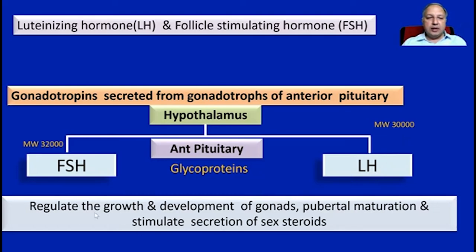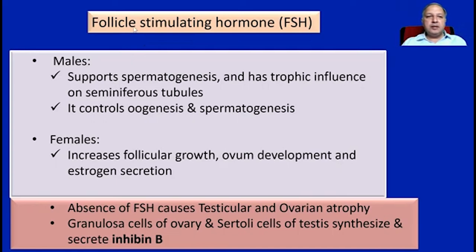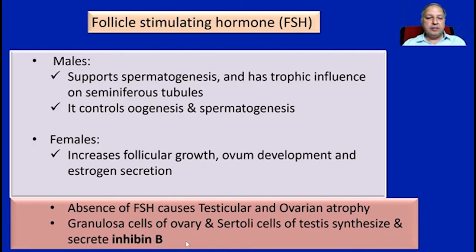These gonadotropins regulate the growth and development of the gonads, pubertal maturation, and stimulate the synthesis of sex steroids. Follicle stimulating hormone: in males, it supports spermatogenesis and has a trophic influence on seminiferous tubules. It controls oogenesis in females and spermatogenesis in males. In females, it causes increased follicular growth, ovum development, and estrogen secretion. The absence of FSH causes testicular and ovarian atrophy. Granulosa cells of the ovary and Sertoli cells of the testis synthesize and secrete inhibin B, which is mainly regulated via feedback inhibition of FSH.